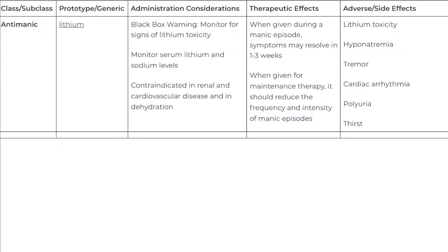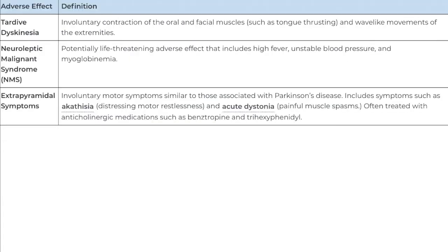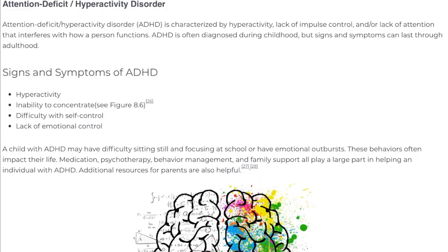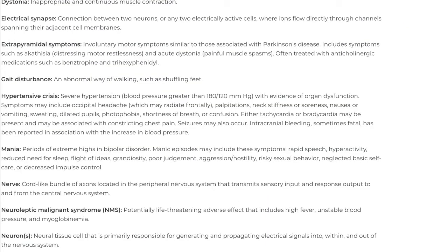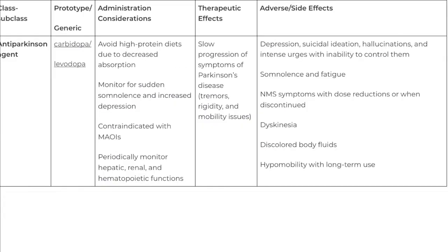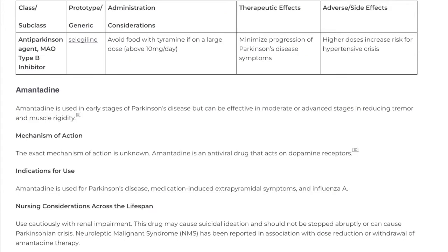Signs and symptoms of Parkinson's disease include tremor at rest, bradykinesia, muscle rigidity, postural instability, gait disturbance, dystonia, ophthalmoplegia, and active mood disorders. Treatment often includes medication to increase dopamine in the brain to slow the progression of the disease.